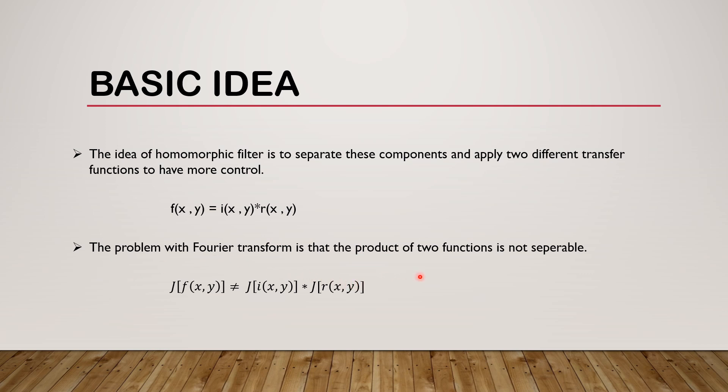The problem with Fourier transform is that the product of two functions is not separable. We know that the Fourier transform cannot be defined for product of two functions and it is not separable in nature. Fourier transform of complex image is not equal to the Fourier transform of illumination into Fourier transform of reflectance. So Fourier transform cannot be applied here.